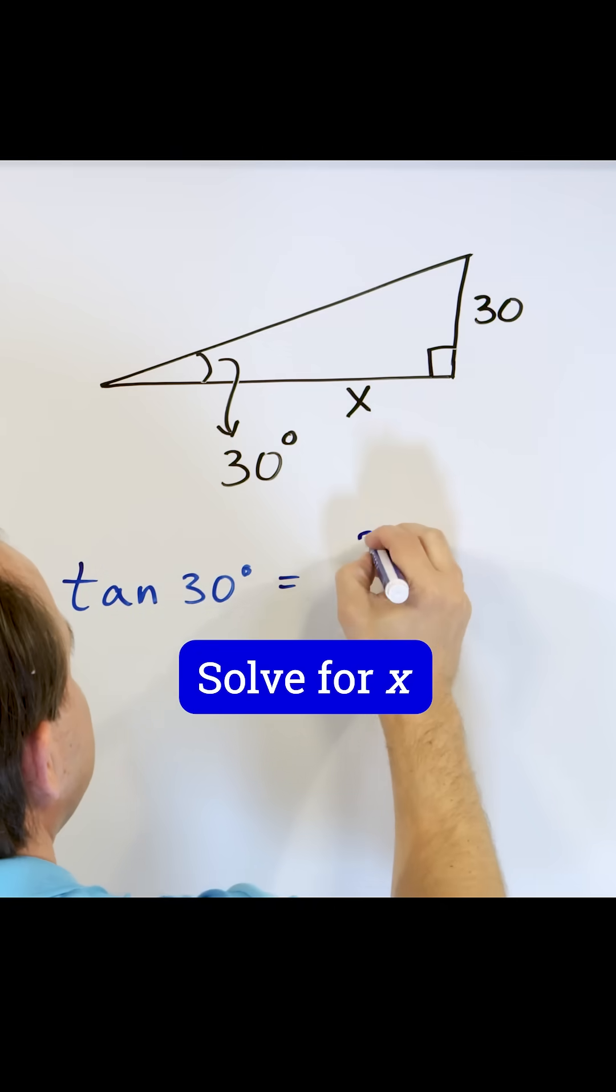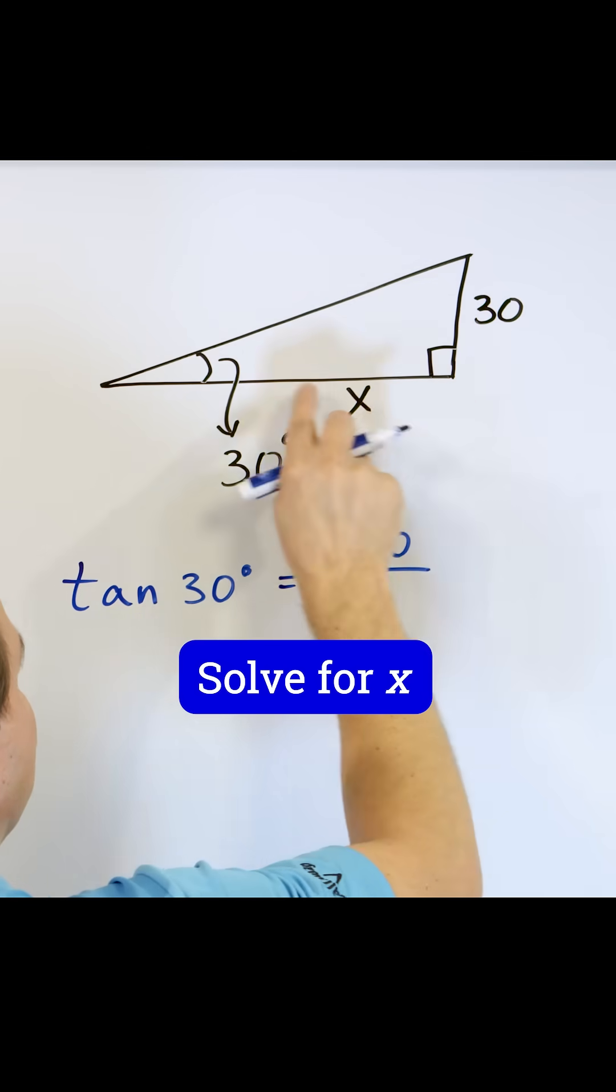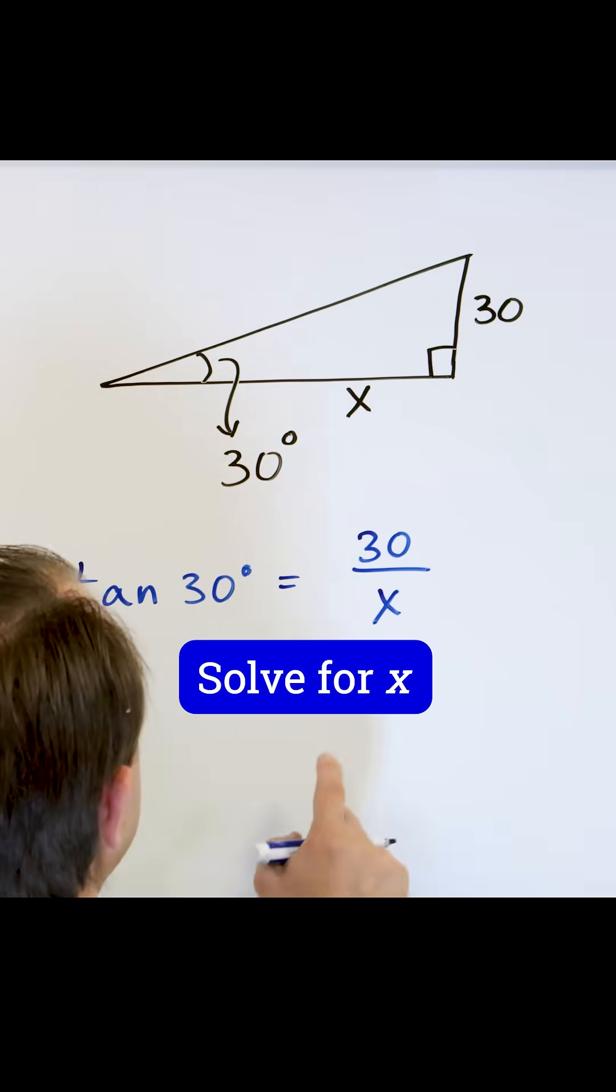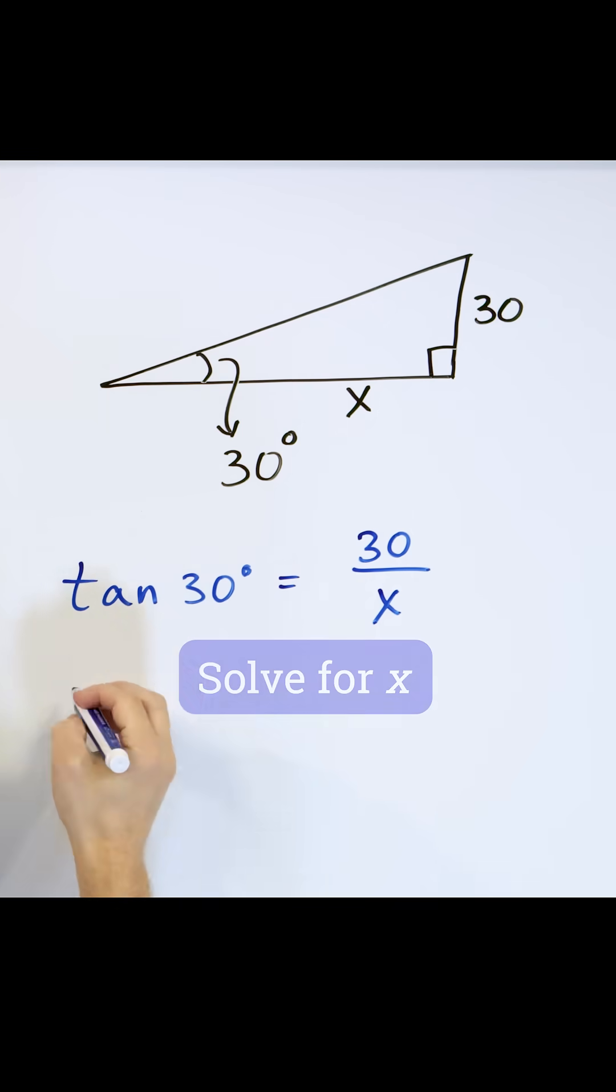So the opposite side of this angle is 30, and the adjacent side of this angle is x. So how do we do this? X is on the bottom. Let's multiply both sides by x. It'll be x times the tangent of 30 degrees is equal to 30. Just multiply both sides by x and x cancels.